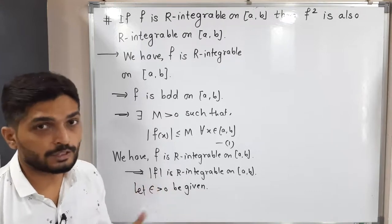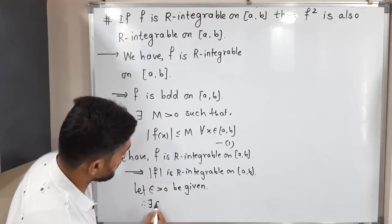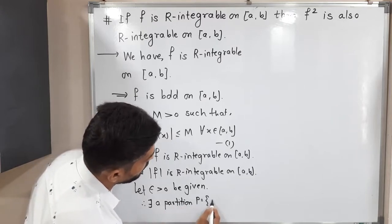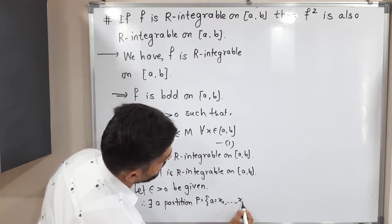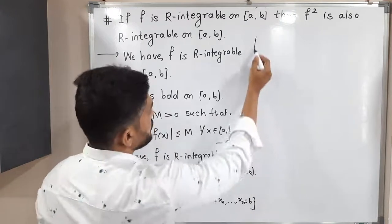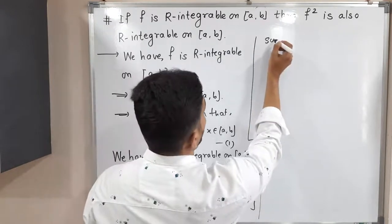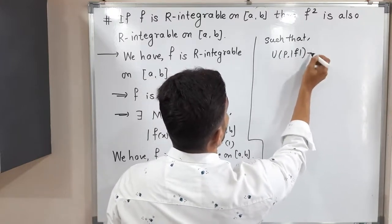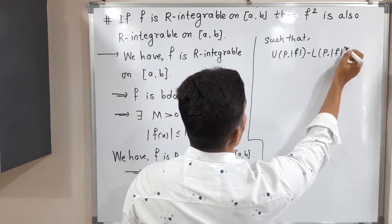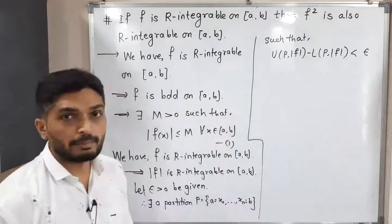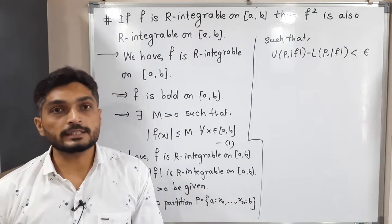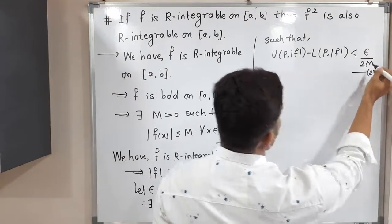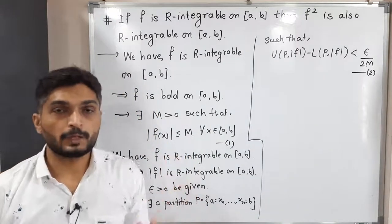Since |f| is Riemann integrable, by the Riemann criterion there exists a partition P = {x₀, …, xₙ} of [a,b] such that U(P, |f|) − L(P, |f|) < ε/(2M). Here I am making a small adjustment, writing ε/(2M) instead of ε, where M is the same bound from statement (1).